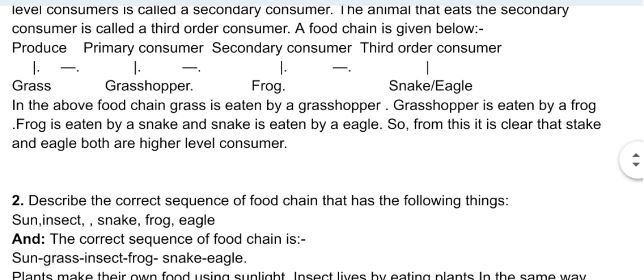A food chain is given below: grass (producer) → grasshopper (primary level consumer) → frog (secondary consumer) → snake (third order consumer) → eagle. In the above food chain, grass is eaten by a grasshopper, grasshopper is eaten by a frog, frog is eaten by a snake, and snake is eaten by an eagle. So from this it is clear that snake and eagle are both higher level consumers.